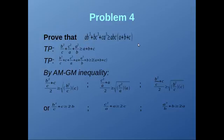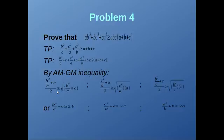Now let's add a + b + c to both sides. We get (b²/c + c) + (c²/a + a) + (a²/b + b) ≥ 2(a + b + c). We need to prove this. Looking at the pair b²/c and c: by AM-GM their sum divided by 2 is ≥ √(b²/c · c), so b²/c + c ≥ 2b. Similarly, c²/a + a ≥ 2c and a²/b + b ≥ 2a. Adding these three inequalities gives (b²/c + c) + (c²/a + a) + (a²/b + b) ≥ 2(a + b + c), which proves our original statement.